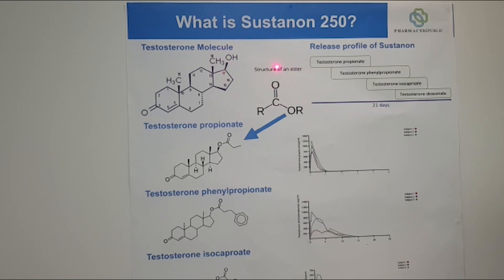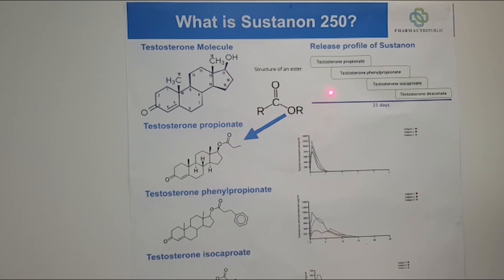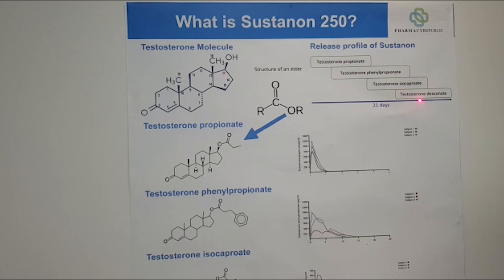Quick review of what an ester is. You have this structural formula and what we do is this R represents the different groups that we add to change the ester. If we look at what's actually in Sustanon 250, we've got a blend of four testosterone esters: testosterone propionate, testosterone phenylpropionate, testosterone isocaproate, and testosterone decanoate.